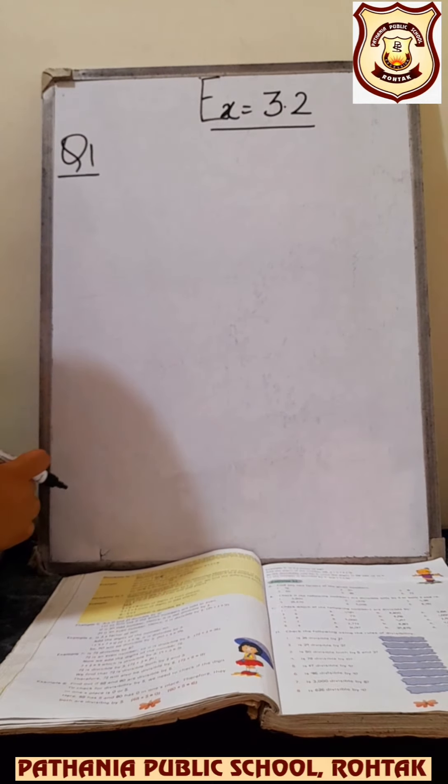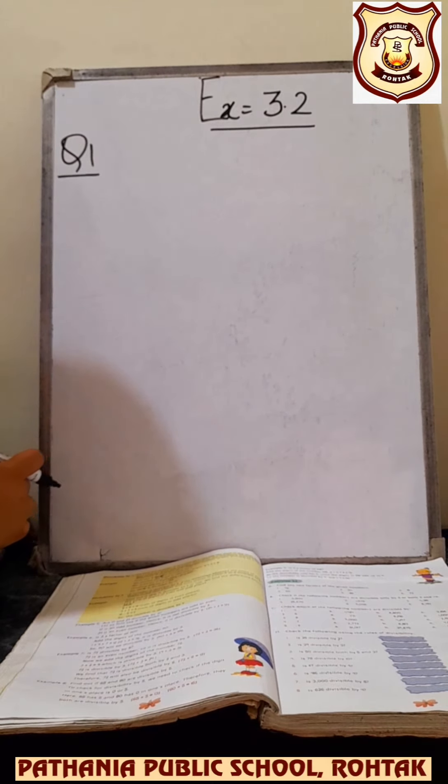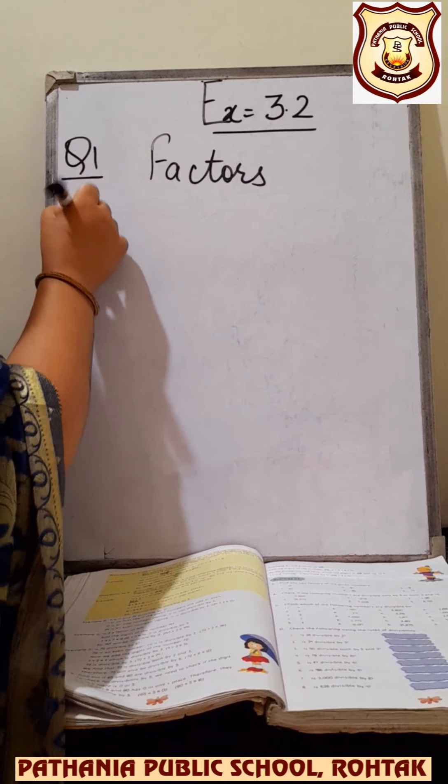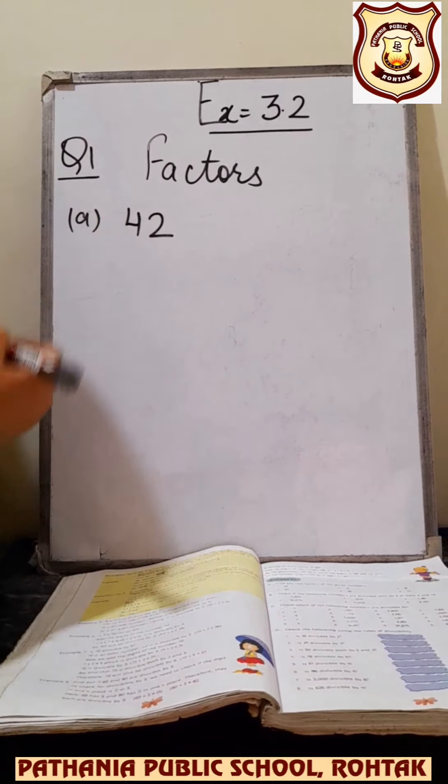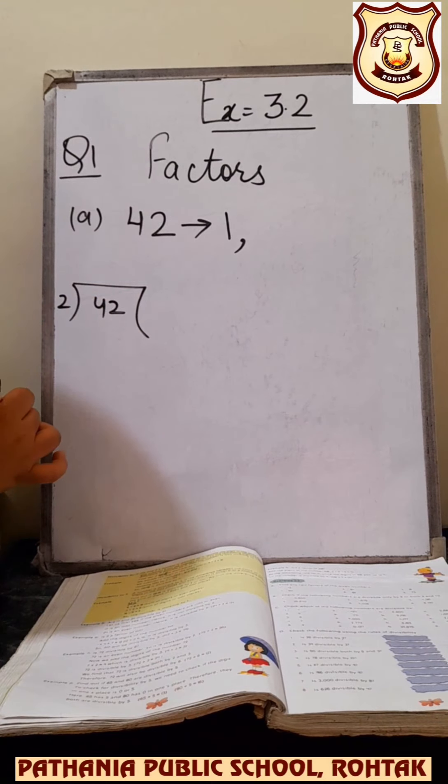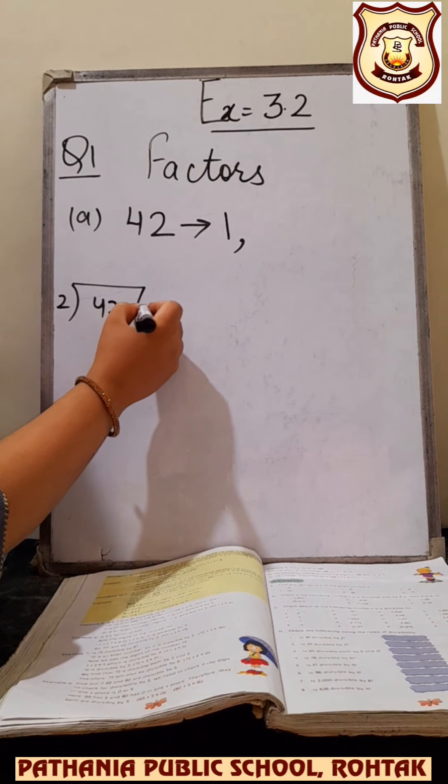The first question of 3.2 is to find the factors. You have to find only 2 factors. The first number is 42, so you have to find the factors of 42. I already told you 1 is the factor of every number, so write 1 first. Now after 1 the next number is 2. Check — is 2 a factor of 42 or not? Just divide them.